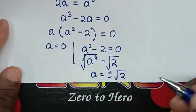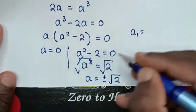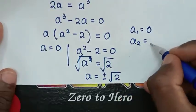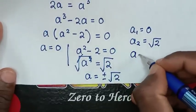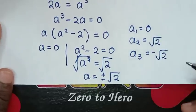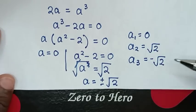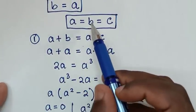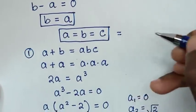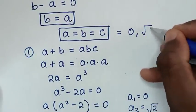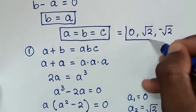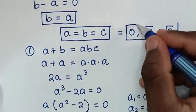Therefore, the three values of A are: A equals 0, A equals positive square root of 2, and A equals negative square root of 2. Since A equals B equals C, the values of A, B, and C are all equal to 0, or square root of 2, or negative square root of 2.